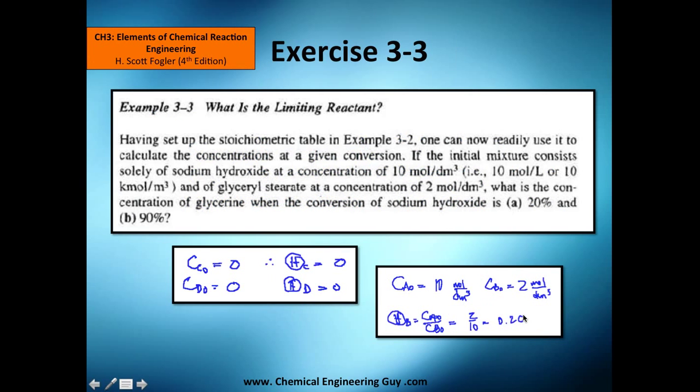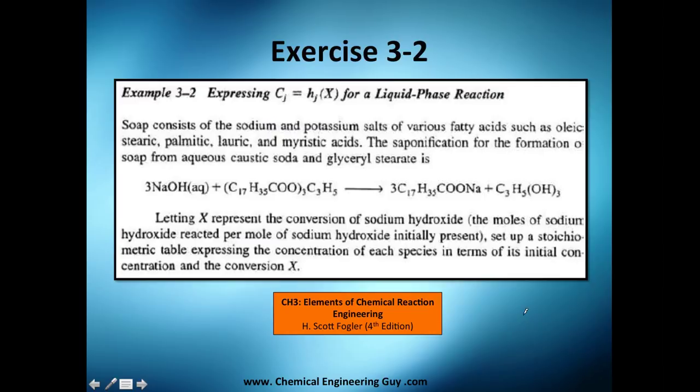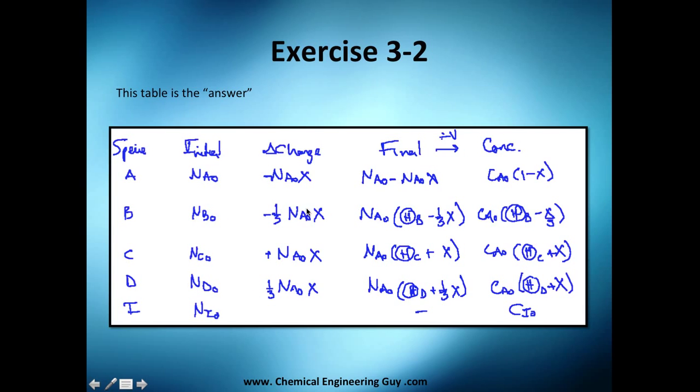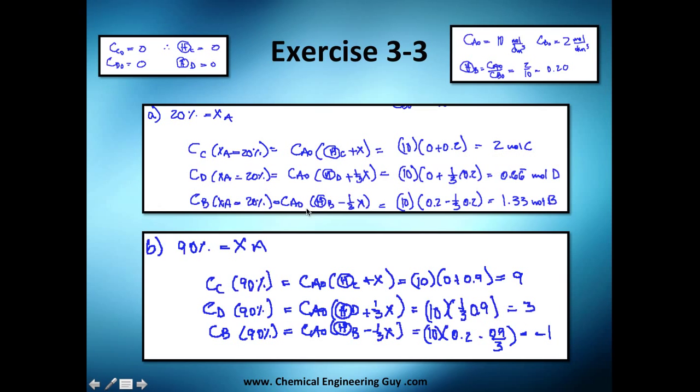For example, they tell us in the previous problem to use sodium hydroxide as our A here. But the truth is that we should have chosen this value here because this was our limiting reactant. And if we don't want to get these negative values, either choose the limiting reactant or don't give us impossible conversions. Because this is impossible. You cannot get this with so little amount of B here. So hopefully you get the idea that negative numbers should not be common in concentration.